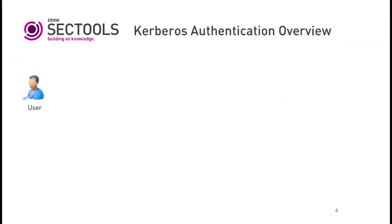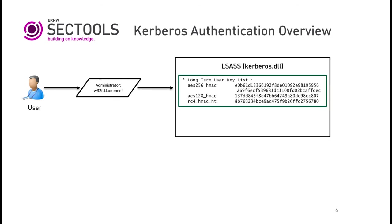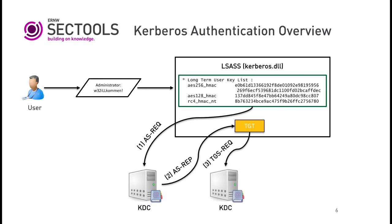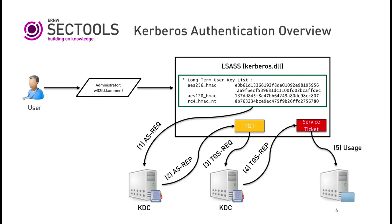Kerberos Authentication Overview: the user enters credentials, the LSASS process generates a user key, and an authentication service request with that user key is sent to the server. If authentication is successful, a ticket-granting ticket (TGT) is provided. The TGT is then used to request a service ticket — for example, to access a file server — and finally the service ticket is used to access the requested resource.